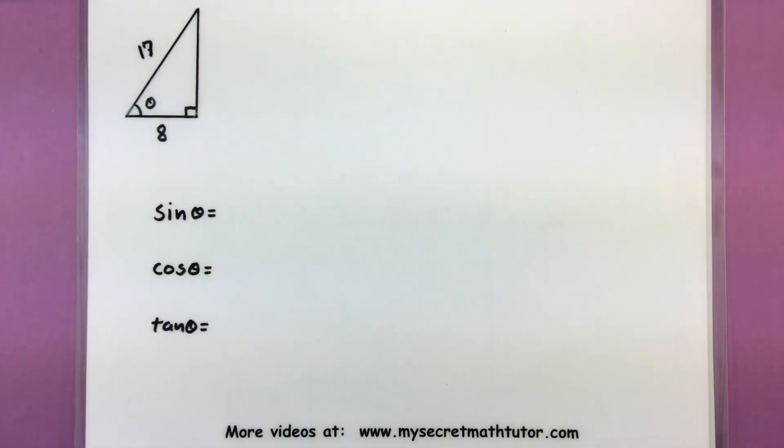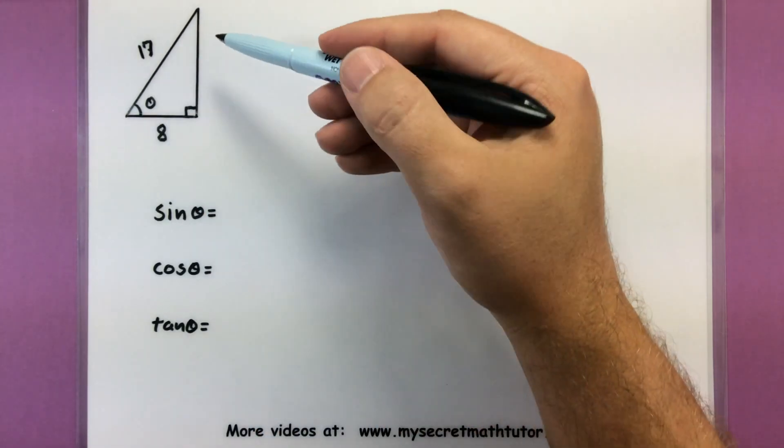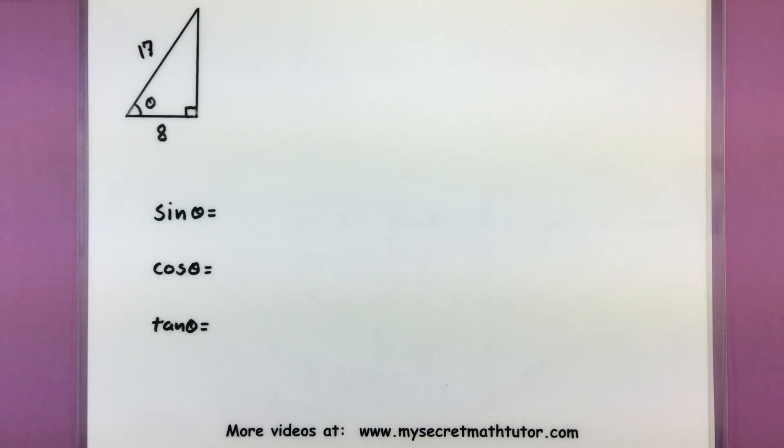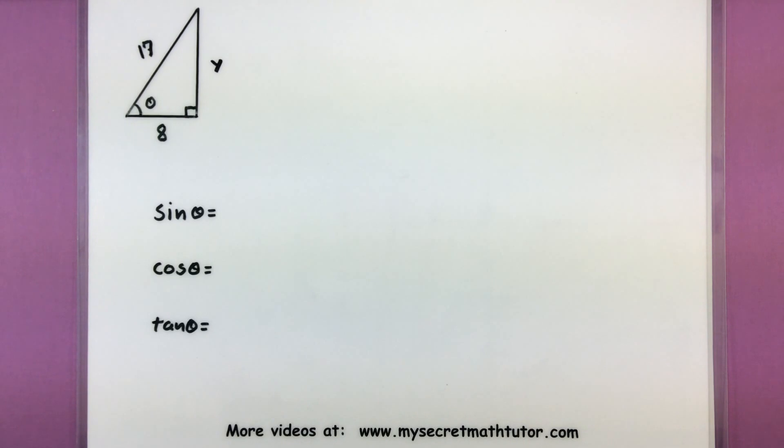In my first example I have a right triangle and I know that one leg is eight and the hypotenuse is seventeen, but I'm missing that other leg. So let's call that missing leg Y and build our Pythagorean theorem so we can find it.